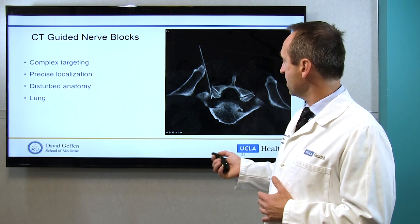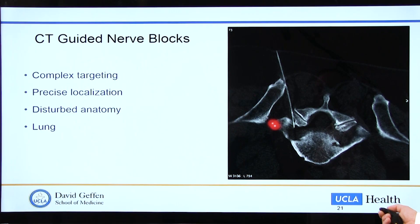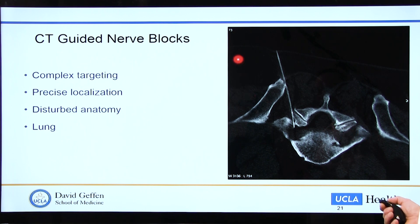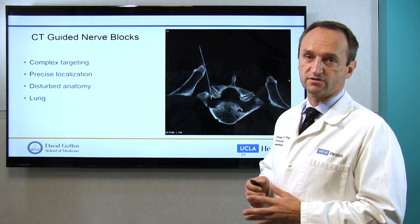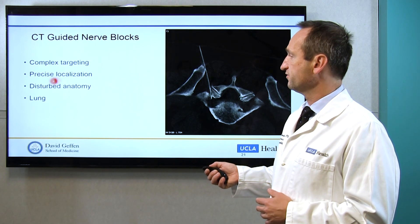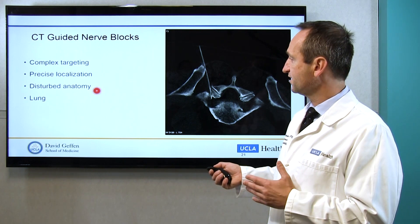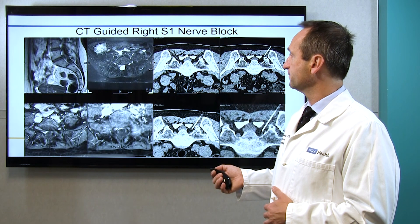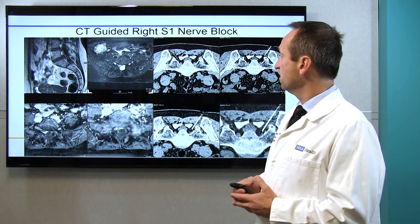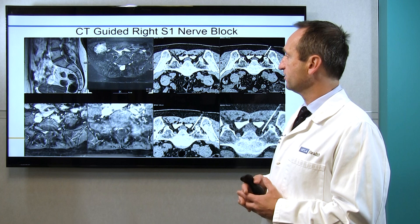CT-guided nerve blocks — more examples. Here is the lower back, S1 nerve — you have the pelvic bone, the spinal column, and you can actually see the nerve on one side and the other side. We can exactly place the needle very close to it, and we don't inject until we are precisely there. Very safe procedure. As mentioned, when anatomy is disturbed, we can see it — we can avoid the lung in the upper spinal area very well.